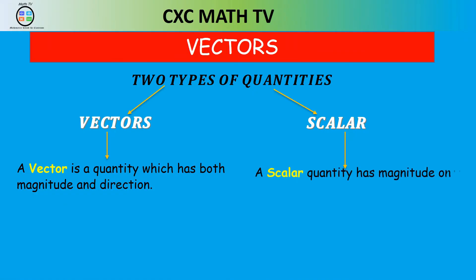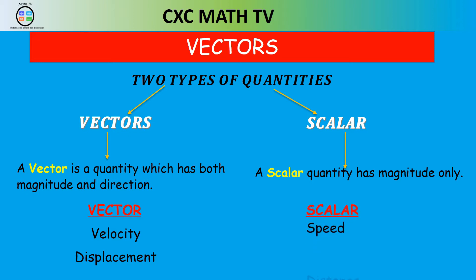Examples of vector quantities are velocity and displacement. Velocity is the speed that you're going in a particular direction, and displacement is the distance you're covering in a particular direction. Whereas examples of scalar quantities are just speed and distance — speed and distance only have a magnitude.